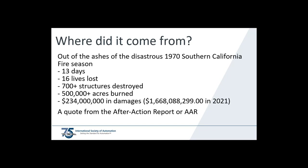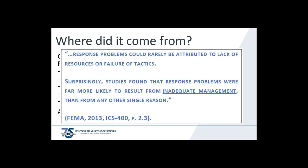The Incident Command System was developed following the catastrophic 1970 Southern California fire season. The season spanned 13 days; 16 lives were lost, over 700 structures were destroyed, more than 500,000 acres were burned, and damages were more than $234 million — the November 2021 equivalent of $1.7 billion. Studies found that response problems were far more likely to result from inadequate management than from any other single reason.